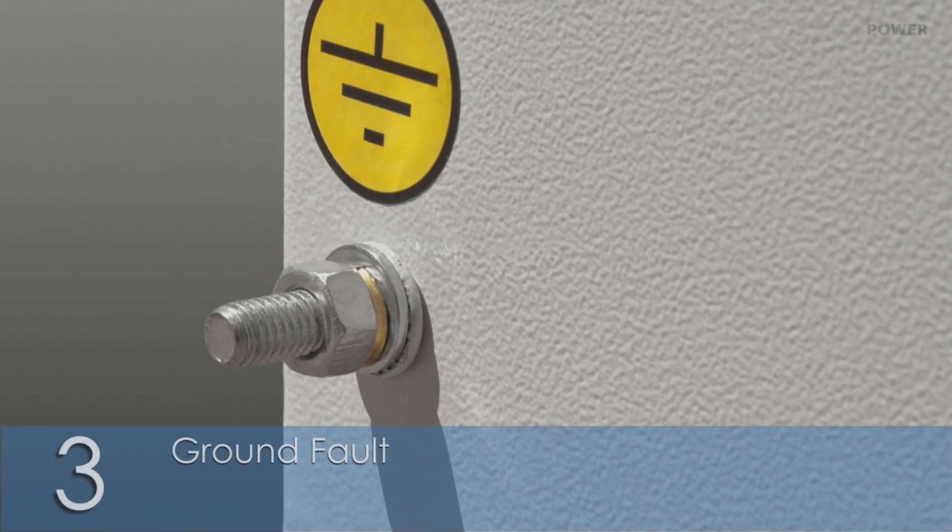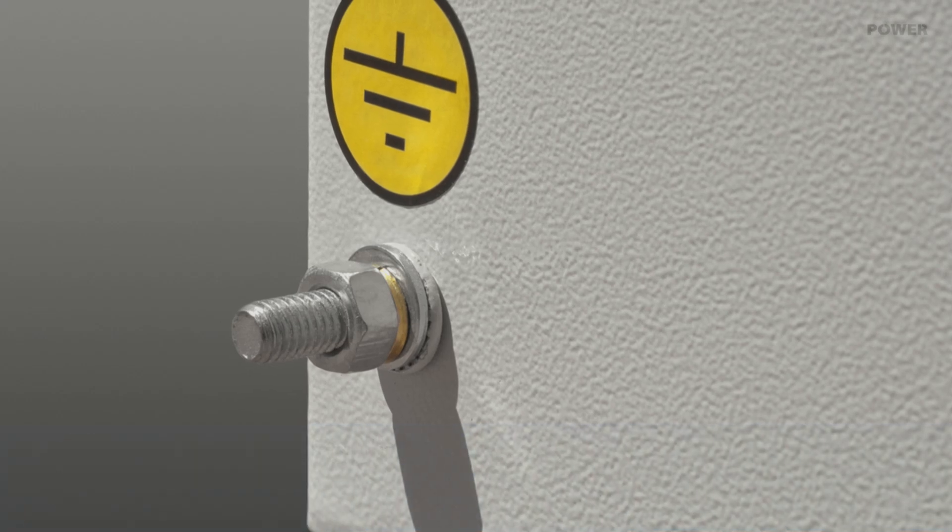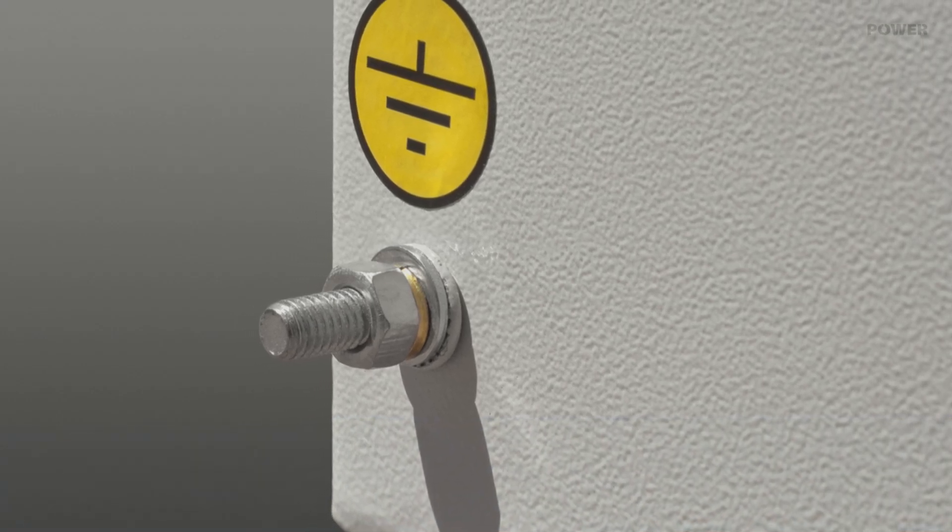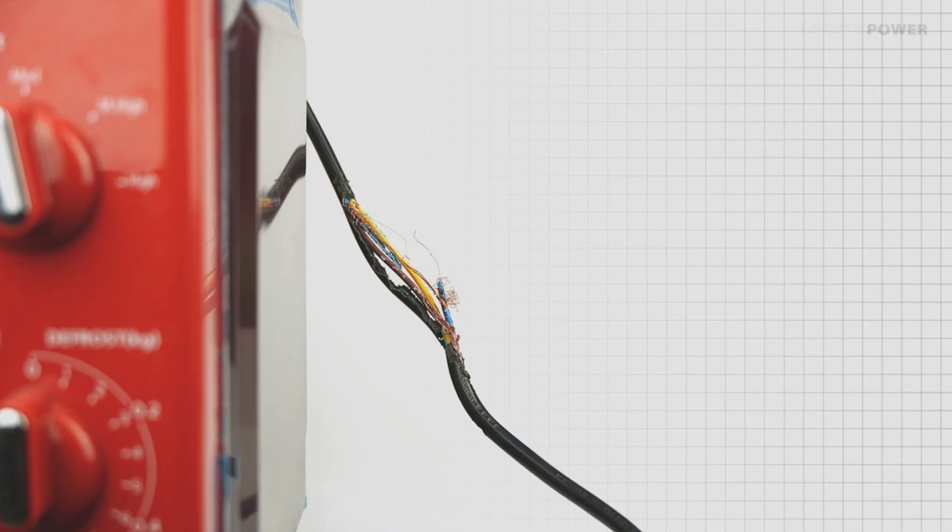Number three, ground fault. This happens when electric current escapes to the ground through a faulty connector. To dampen the impact, the breaker might trip.